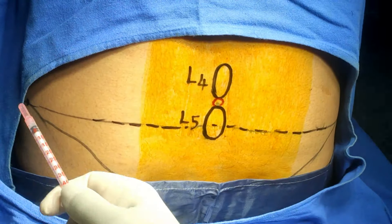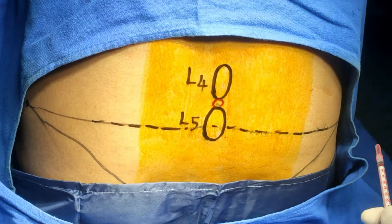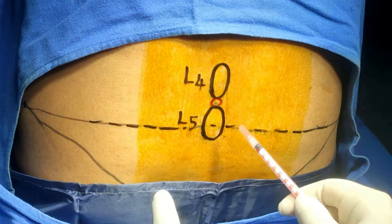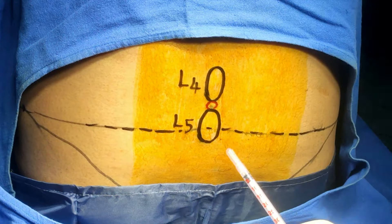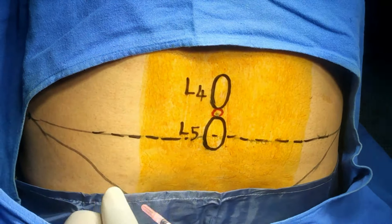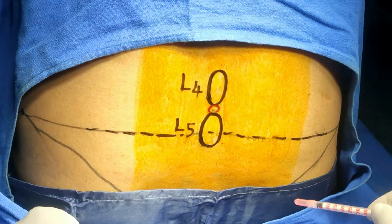If you draw a line from the top of the iliac crest, this line passes nearly at the L4-L5 level. So this is L4, this is L5 spinous process, and I have marked the oblique line.